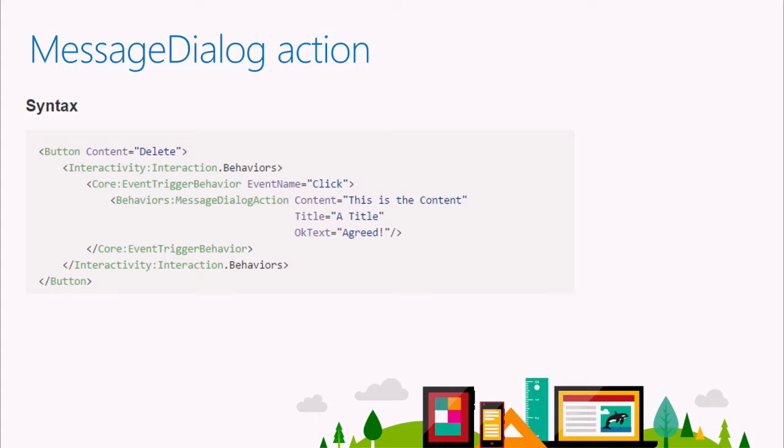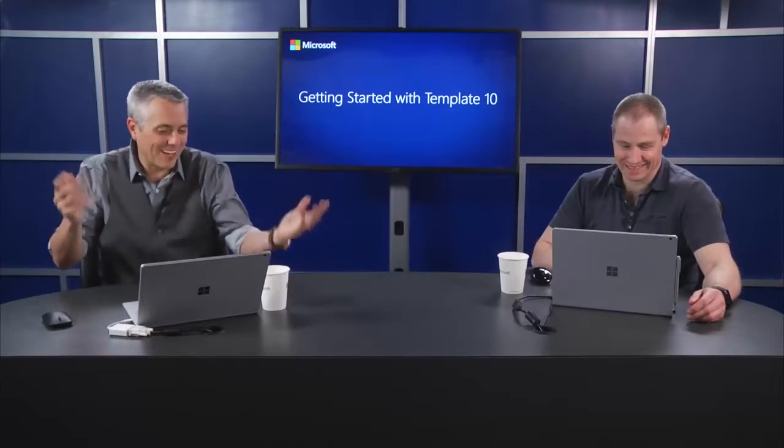Previously we were talking about the conditional action, and you might actually have a condition that says if it's not allowed for whatever reason, the action you take is a message dialogue that says 'this is not allowed because of this reason.' That's pretty cool. You could even use it for a 'required' message or an 'are you sure?' confirmation, though you can only respond with okay.